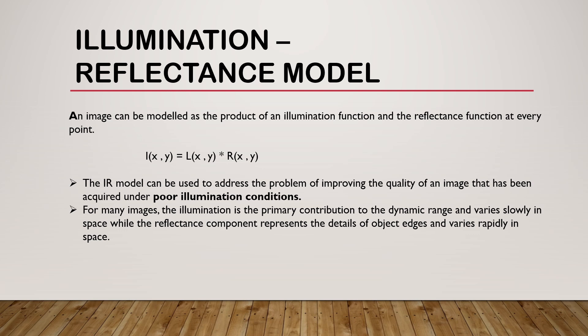For many images the illumination is the primary contribution to the dynamic range and varies slowly in space. While the reflectance component represents the details of object edges and varies rapidly in space. These characteristics lead to associating the low frequencies of the Fourier transform of the logarithm of an image with illumination, and the high frequencies with the reflectance.